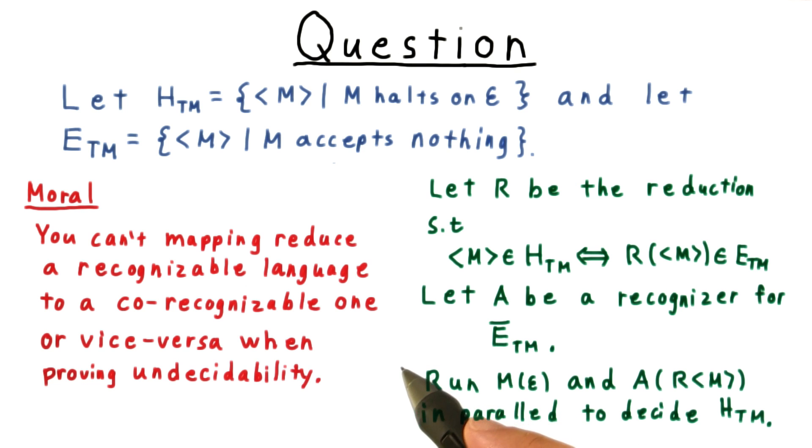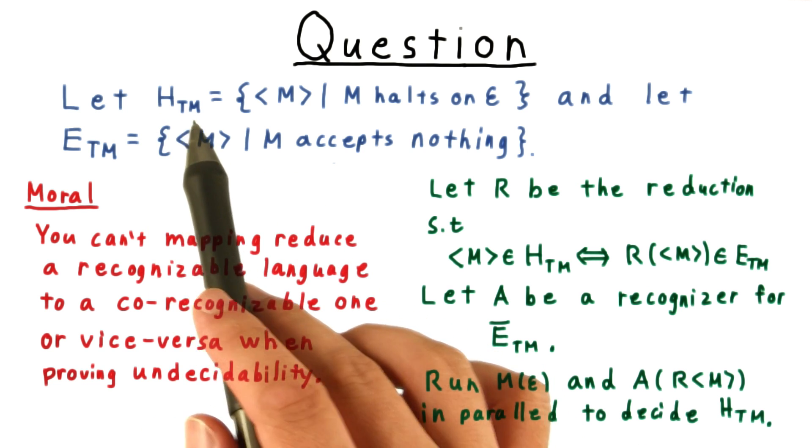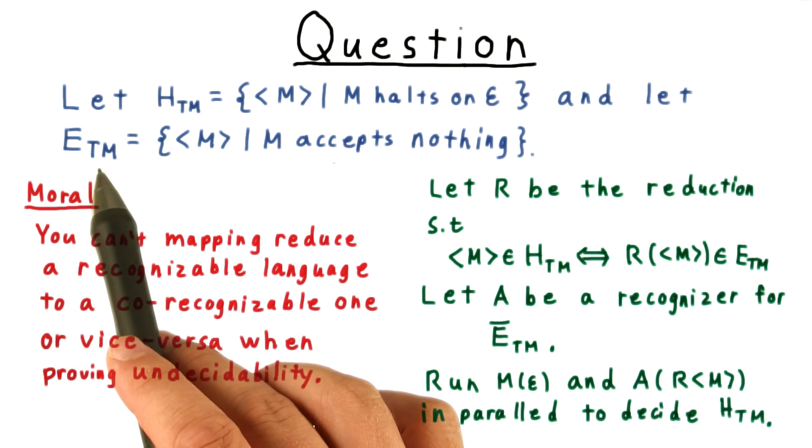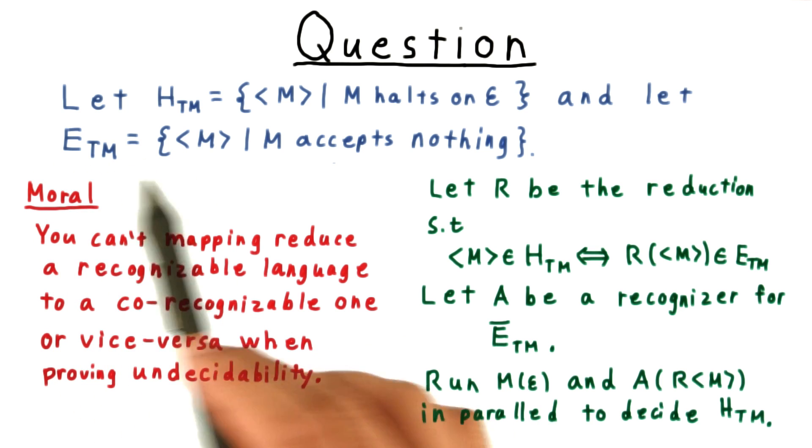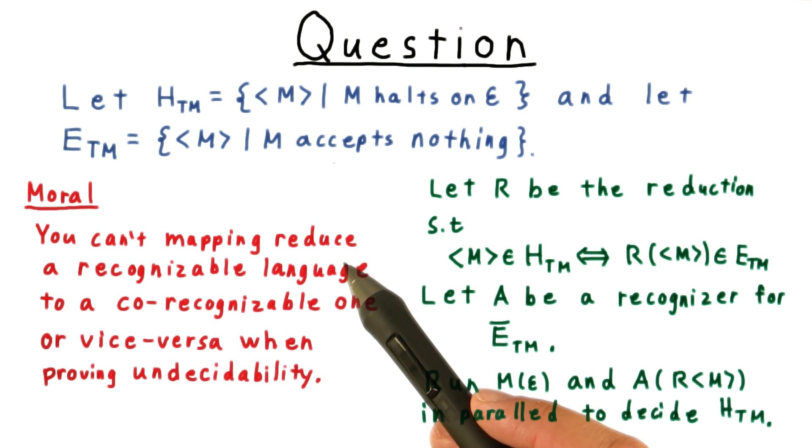Overall then, the moral of the story is that you can't mapping reduce a recognizable language, like the halting problem, to a co-recognizable language, like the empty problem. A co-recognizable language, by the way, is one whose complement is recognizable. And vice versa doesn't work either. Keep this in mind when you're trying to prove undecidability.